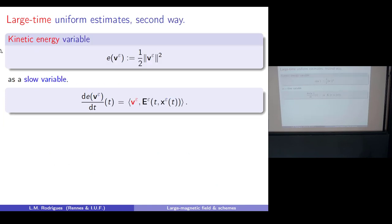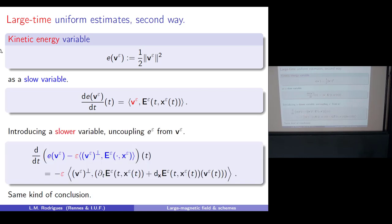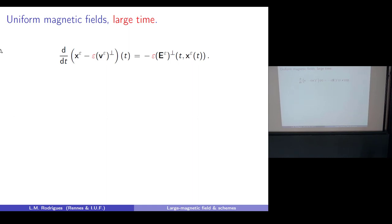Let me show a second way that will be useful for later arguments. Not only is v oscillating; it is only the angle of v that oscillates — the modulus is actually slow. So you can write an equation for the modulus, which is slow in the sense that there is no large factor. You can replace v using its oscillating structure, and get an equation for a modified kinetic energy. Integrating that gives the same kind of bound.